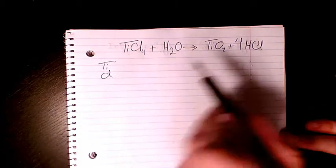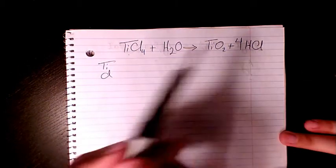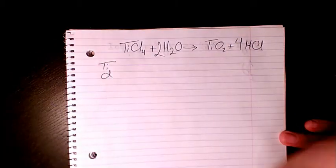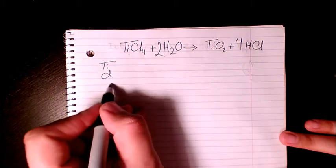So titanium is balanced. Chlorine is balanced. What about hydrogen? Hydrogen, we have four of them here and we have two here. So we just put two, two times two, four. So hydrogen is balanced as well.